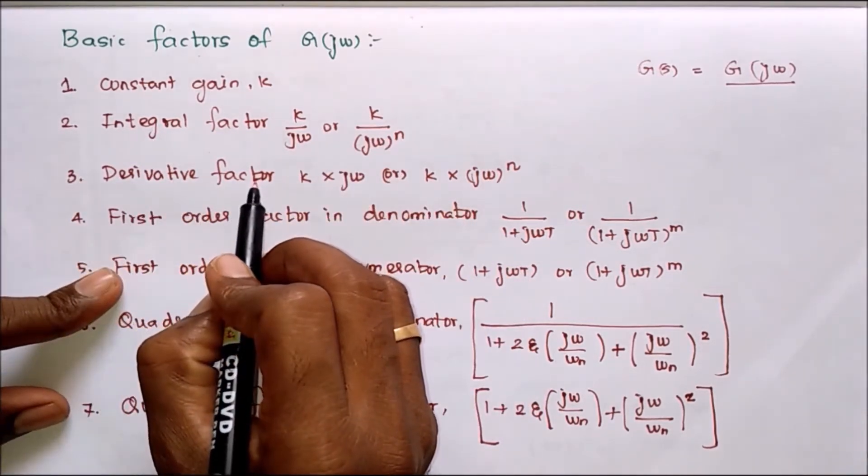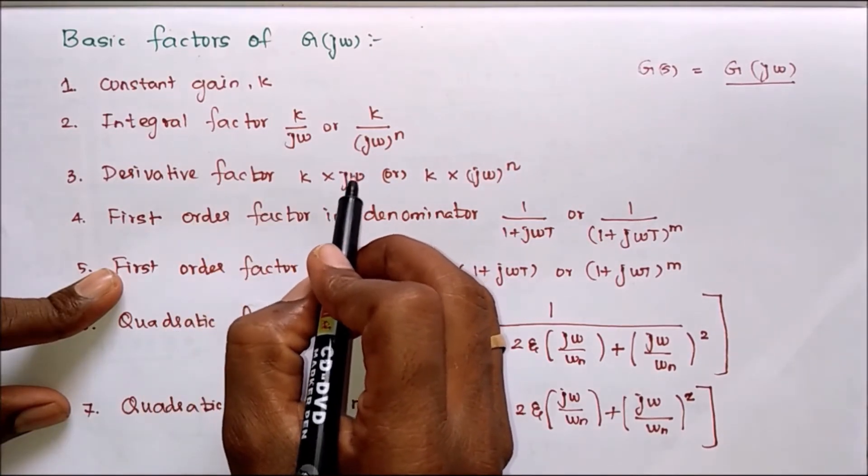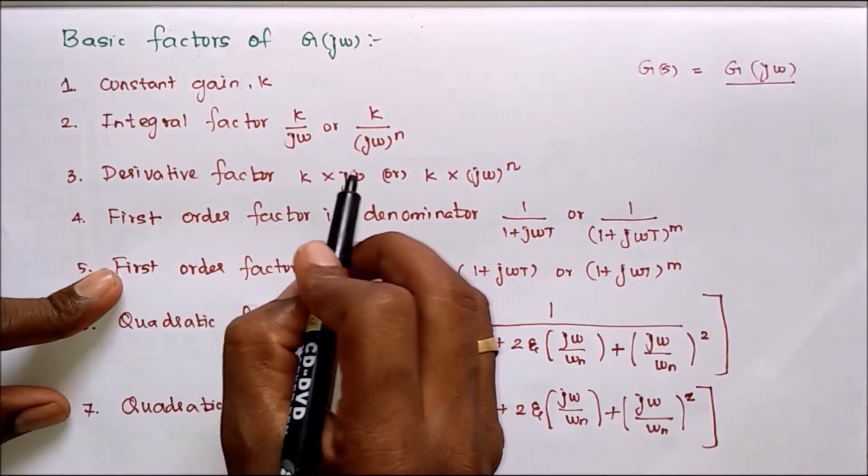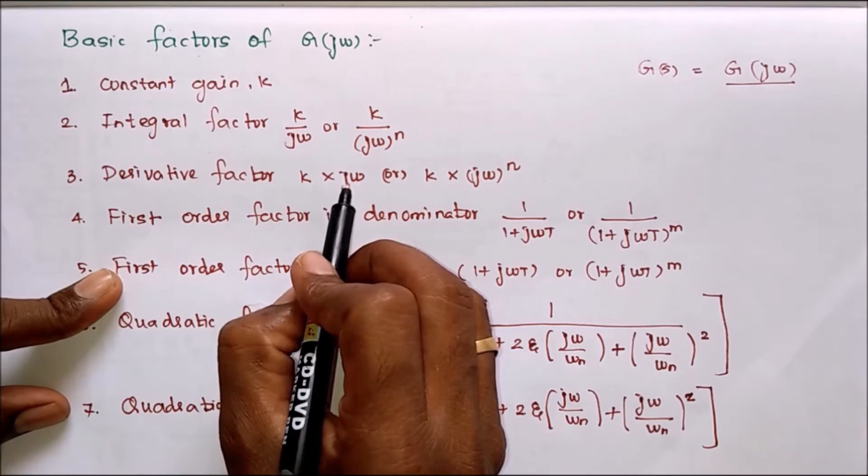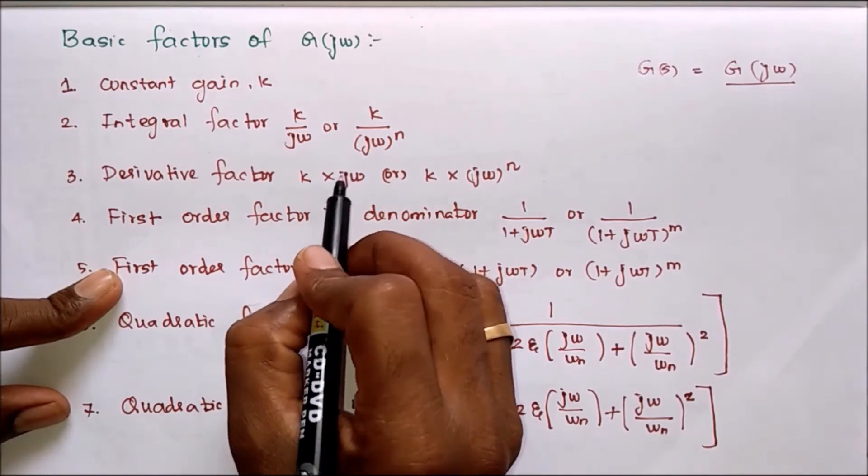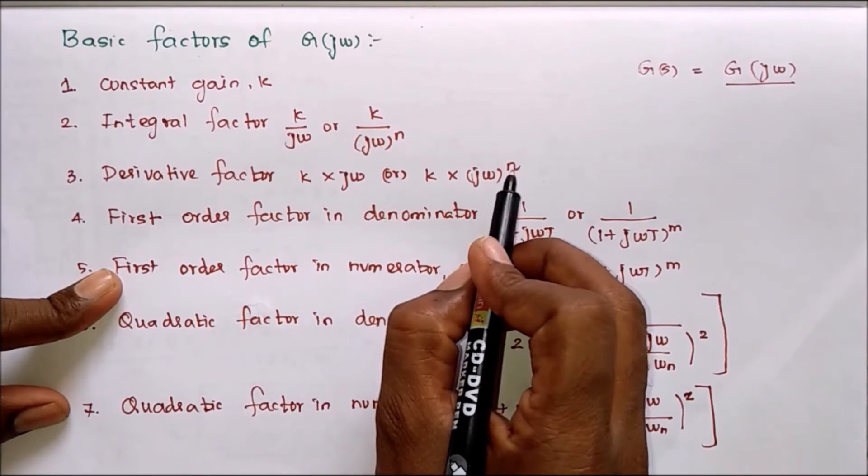Next derivative factor. Derivative factor means K times jω, and K both are in multiplication form. This is first order, this is nth order.